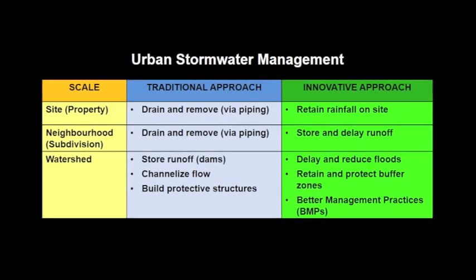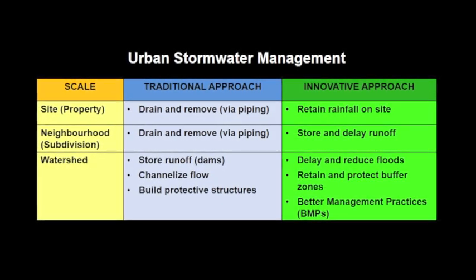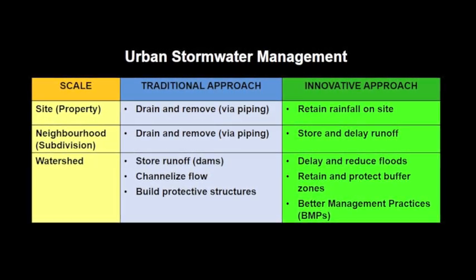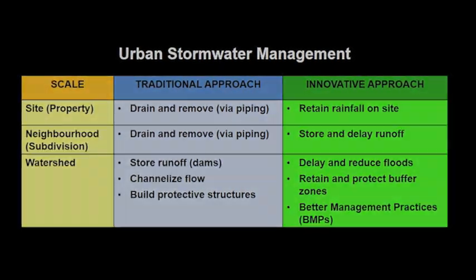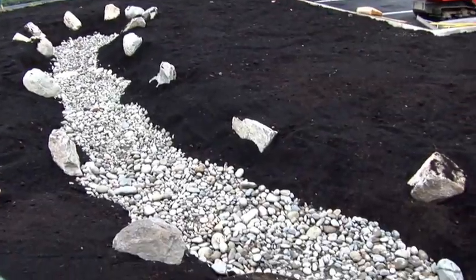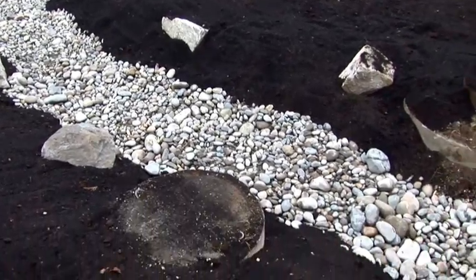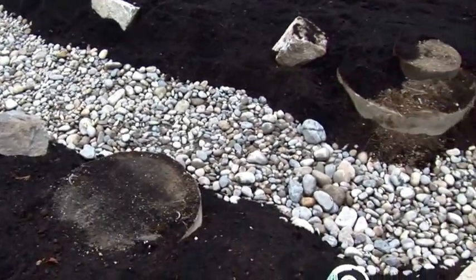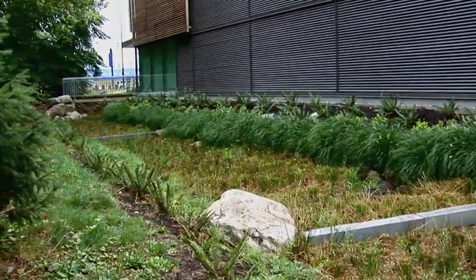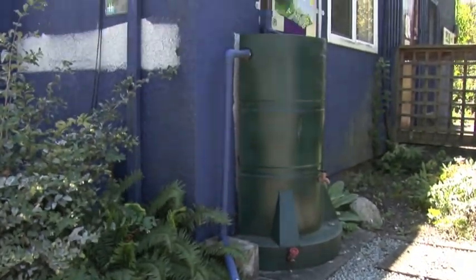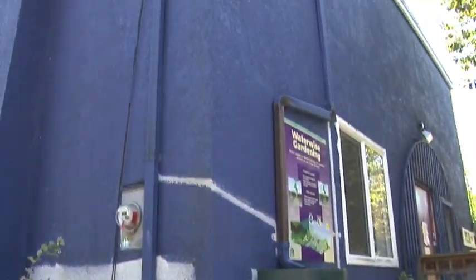Watershed processes differ from the headwaters to the mouth of a catchment, and from activities at the property, neighborhood, and watershed scales. This video series showcases innovative designs in urban stormwater management on three scales. One, the property scale — this video shows innovative approaches that individual home and business owners can take to reduce the risk of flooding and water contamination.